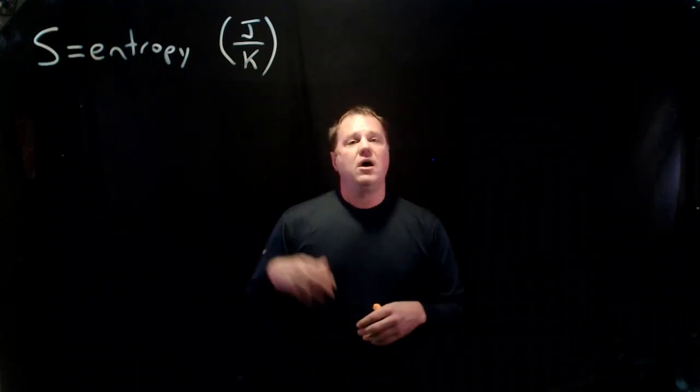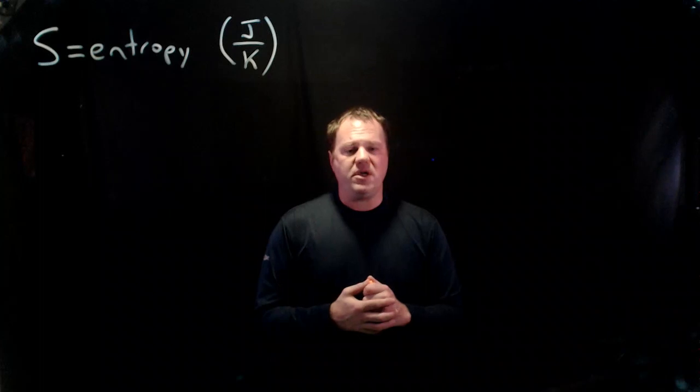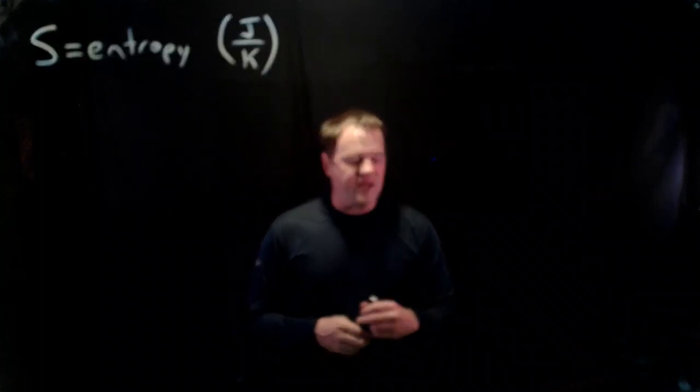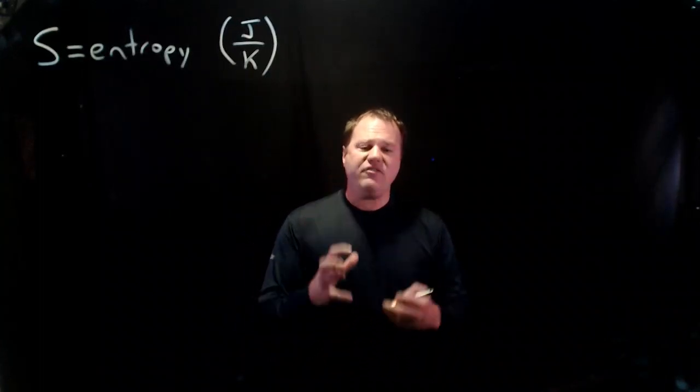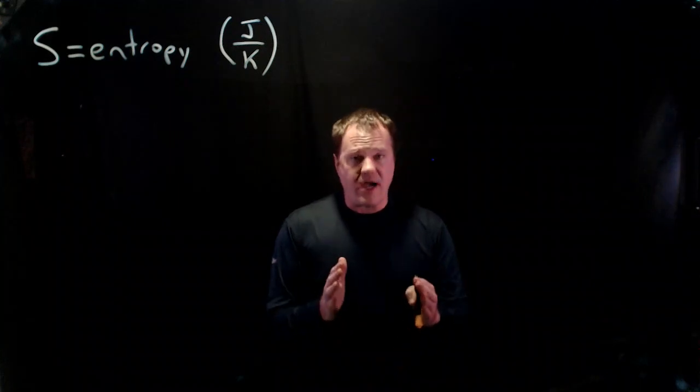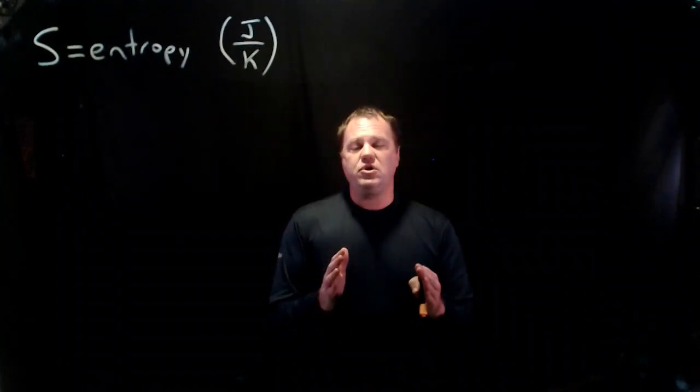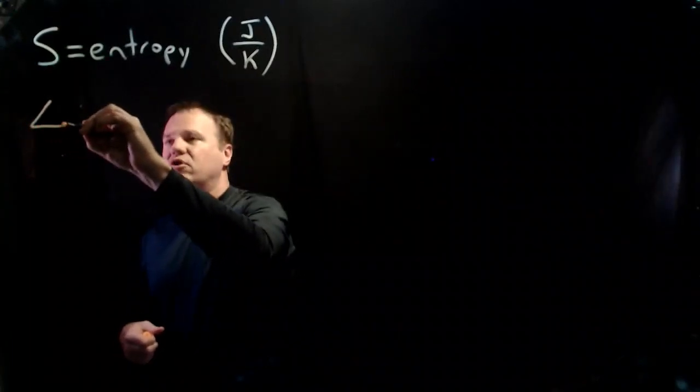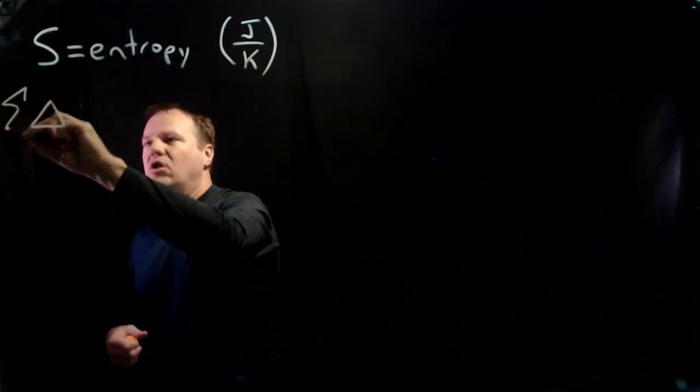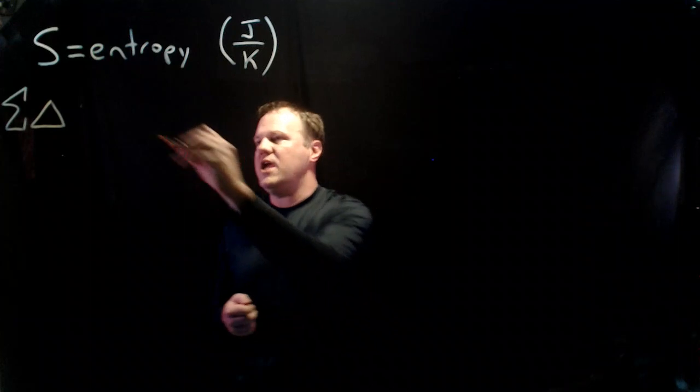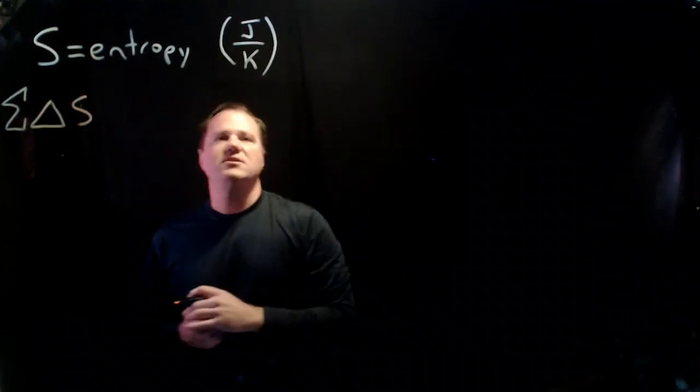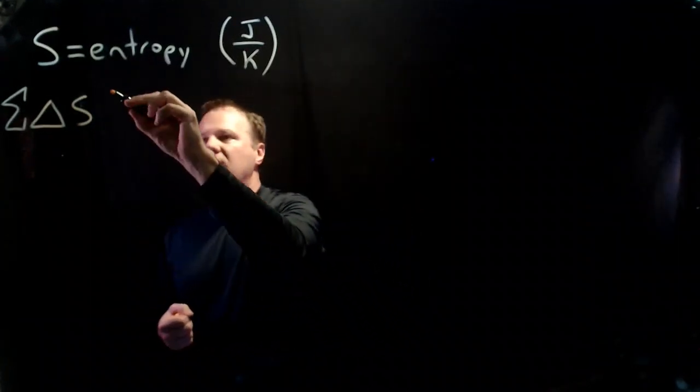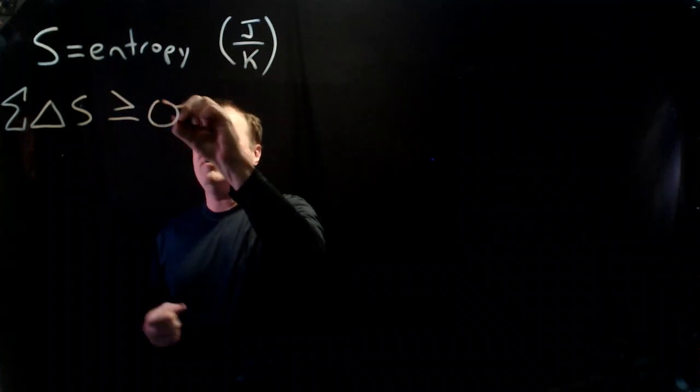I'll show you how to calculate entropy in just a bit here. But if you do calculate changes in entropy, they have to, in total, for interacting systems, add up to be greater than or equal to zero. And that's the second law of thermodynamics. If you take all of the changes in entropy for interacting systems, add them up, then they will be greater than or equal to zero.